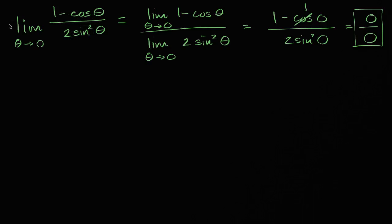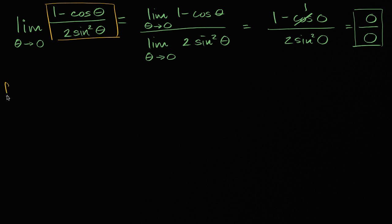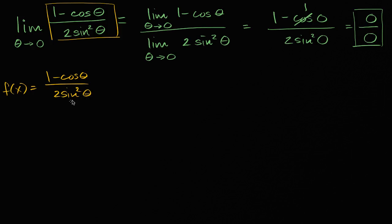So let's say that this right over here is f of x. So f of x is equal to one minus cosine theta over two sine squared theta. And let's see if we can rewrite it in some way such that the limit as theta approaches zero won't give us zero over zero again. We have some trig functions here, so maybe we can use some of our trig identities to simplify this.